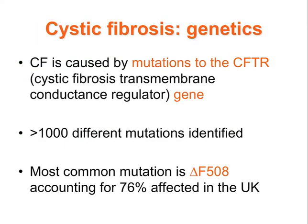Cystic fibrosis is caused by mutations to the CFTR gene — the cystic fibrosis transmembrane conductance regulator gene. There are over 1,000 different mutations identified; however the most common mutation is the delta F508, accounting for 76% of those affected in the UK.